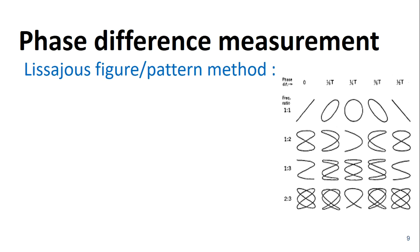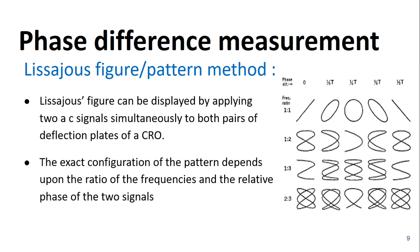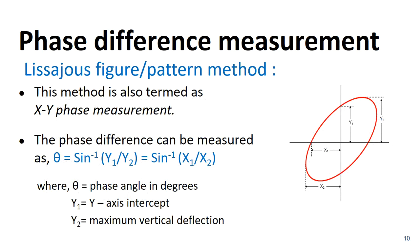The Lissajous figure method of measuring the phase difference is also termed as XY phase measurement. The phase difference can be measured using the formula: theta = sin⁻¹(Y1 / Y2) = sin⁻¹(X1 / X2), as shown in the figure. Y1 is the Y-axis intercept, that is the distance from the X-axis to the point where the Lissajous pattern crosses the Y-axis, and Y2 is the maximum vertical deflection.